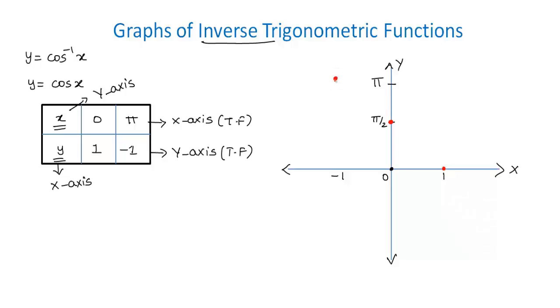Here we get a point, and by joining all these points we get the graph of y equals cos inverse x.